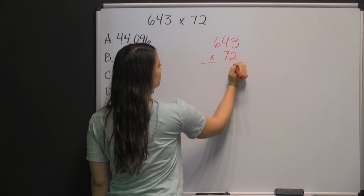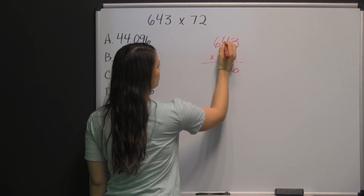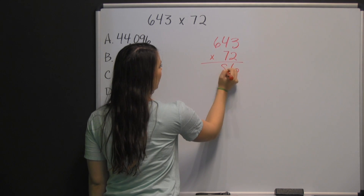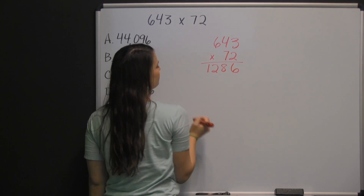2 times 3 is 6, 2 times 4 is 8, and 2 times 6 is 12.